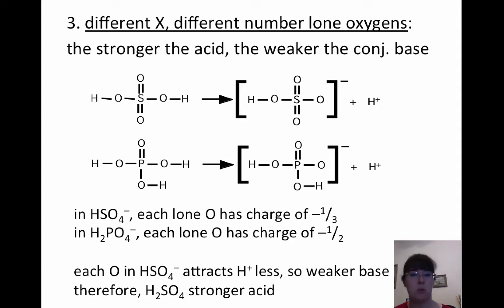So in this case, we want to take a look at the things that are in brackets. And if you'll notice, for the one with sulfur, it's got three lone oxygens that are sharing one negative charge. So each lone oxygen essentially has a charge of negative one third. There's three of them sharing a negative one charge.